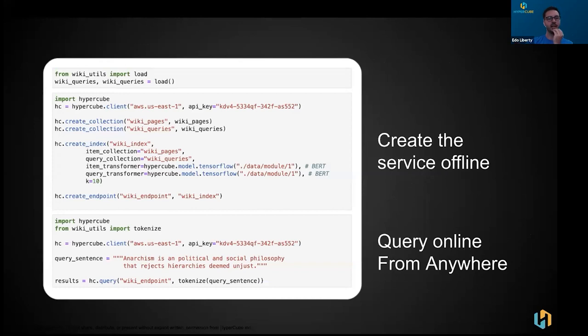So I sweep under the rug with this load function some loading of the XML of the Wikipedia dump and parsing it, all sorts of nonsense that has, well, it's significant in terms, in the sense that it's important to get right. Okay. So if you're trying to do this with Hypercube now,